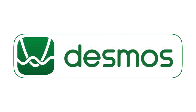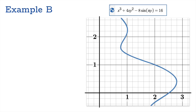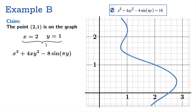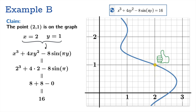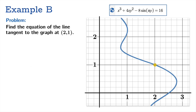For the next example, we use the graphing utility Desmos. The graph is x³ + 4xy² − 8sin(πy) = 16 — a ferocious-looking equation — and the point (2, 1) appears to be on the graph. Substituting x = 2 and y = 1 into the left-hand side gives 16, confirming that (2, 1) satisfies the equation and is on the graph. Our problem is to find the equation of the tangent line at that point.